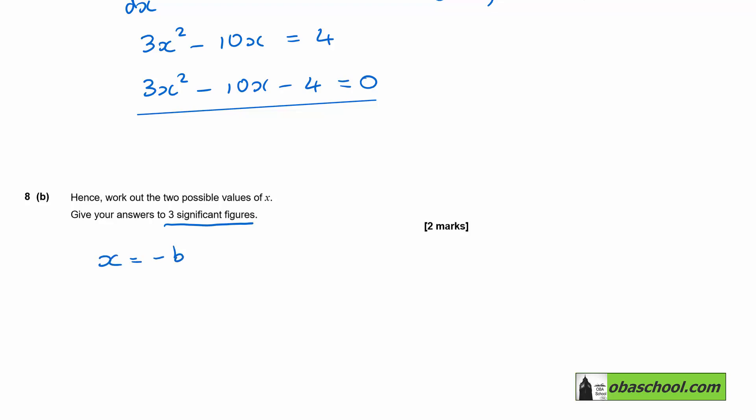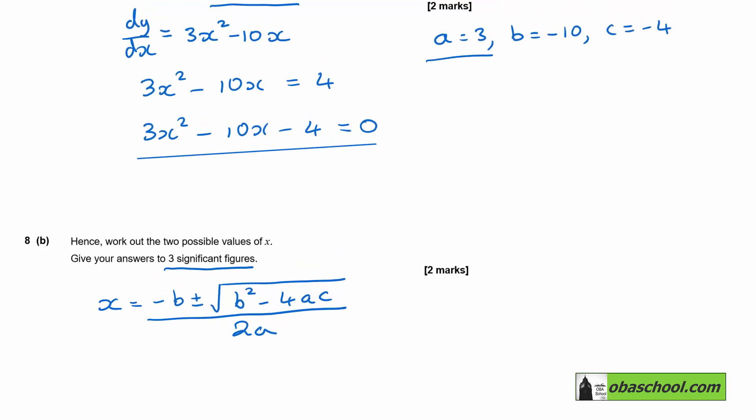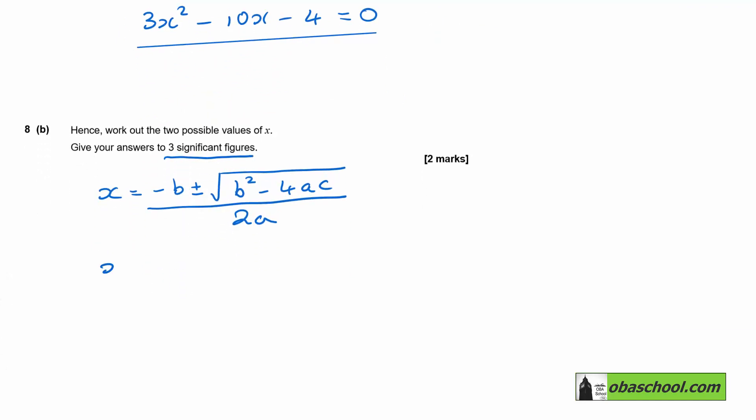x is equal to negative b plus or minus the square root of b squared minus 4ac divided by 2a. And from above, we have the values of a, b and c to substitute in. So x is going to be 10 plus or minus, if we square negative 10, we get 100, take away 4 times 3 times negative 4, all divided by 2 times 3, which is 6.